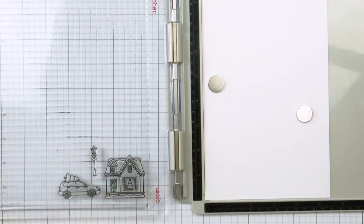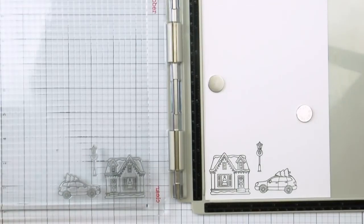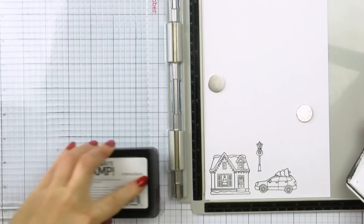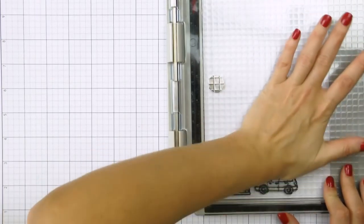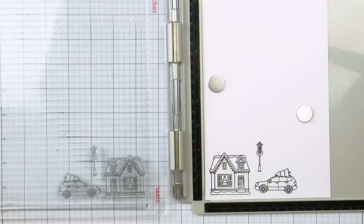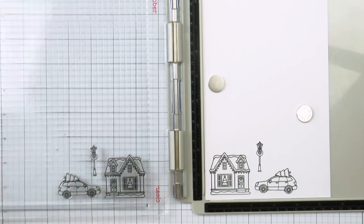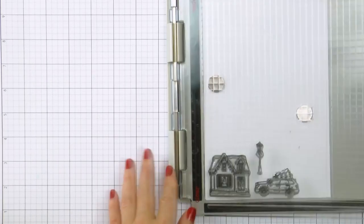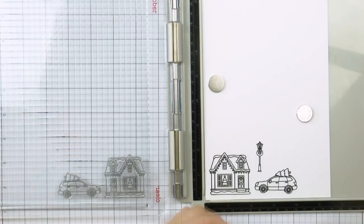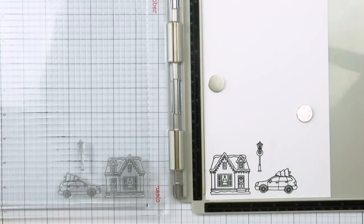I'm using my stamp platform and stamping a house, a car, and a lamppost in Simon's Intense Black ink onto my paper. You can easily stamp these with a clear block but I wanted to make sure that I would get a perfect impression so I'm using my stamping tool to be able to double and even triple stamp my images if needed. Plus I always like to have the blackest black outline and I don't always get that if I stamp images just once.